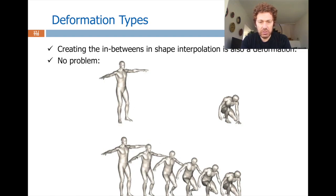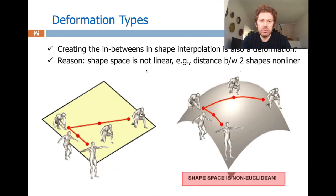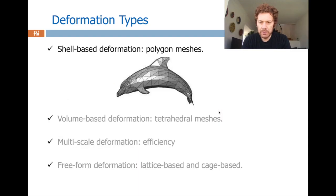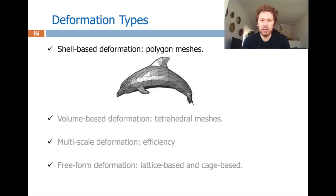This simple idea can work if your source and target shapes are compatible enough, but usually they are not. You lose information — like the loss of hand volume here. The reason is obvious: the shape space is not linear, and you are doing a linear interpolation. So when you do linear interpolation you don't hit the correct midpoint; you hit a point slightly off, which leads to those artifacts. There are nice nonlinear or data-driven algorithms for this, but it is not the heart of today's topic.